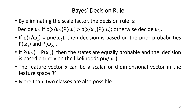By eliminating the scale factor, the decision rule becomes: decide omega_1 if p(x | omega_1) * p(omega_1) > p(x | omega_2) * p(omega_2); otherwise decide omega_2. If p(x | omega_1) equals p(x | omega_2), the decision is based on the prior probabilities p(omega_1) and p(omega_2). If p(omega_1) equals p(omega_2), both classes are equiprobable and the decision is based on the likelihood probability p(x | omega_j). The feature vector x can be scalar or a d-dimensional vector in feature space, and more than two classes are possible.